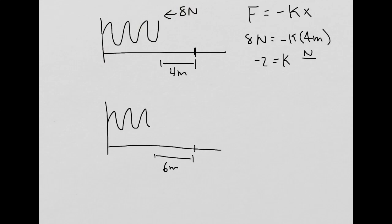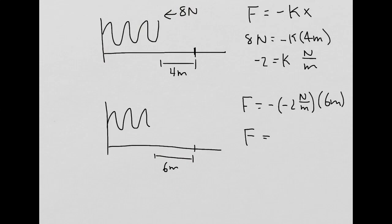The units for k are newtons over meters. I can take that information and plug it into the second scenario. Since it's the same spring, k will be the same in both cases. I know k and I know the distance, so I'm just finding the force. I get that the force equals negative 2 newtons per meter times 6 meters, so the force is equal to 12 newtons. This answer makes sense because I'm compressing the spring more in the second scenario, so it should take a larger force.